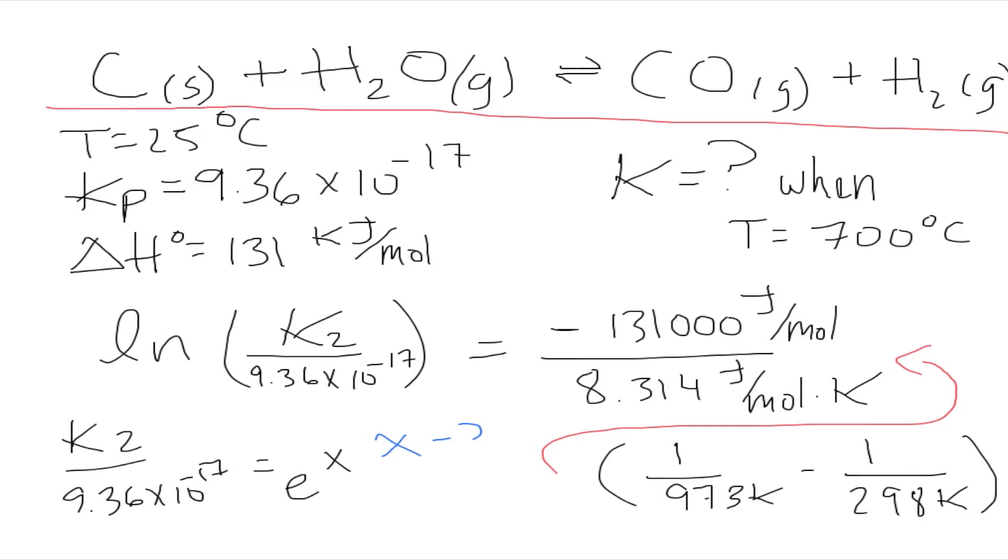Let's see how this goes. We have K2 over 9.36 times 10 to the negative 17 is equal to E to the power of X, which should be 1.51 times 10 to the 15.